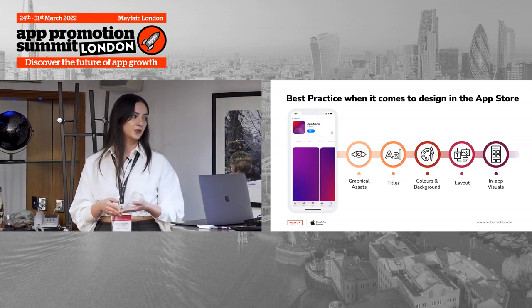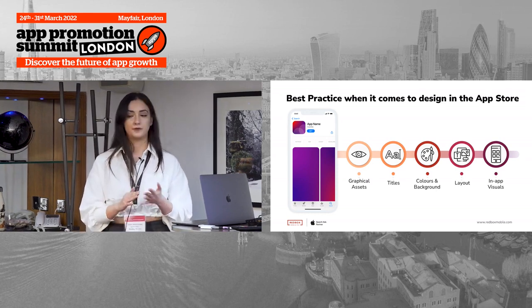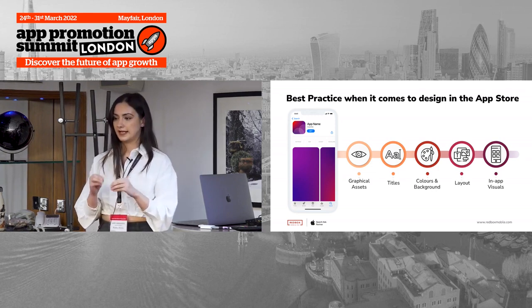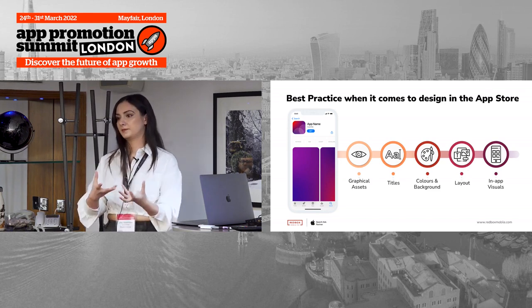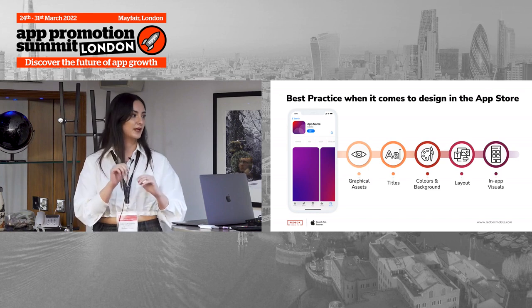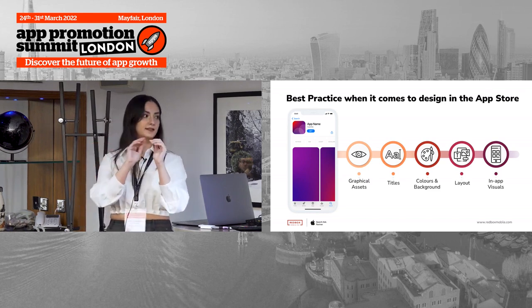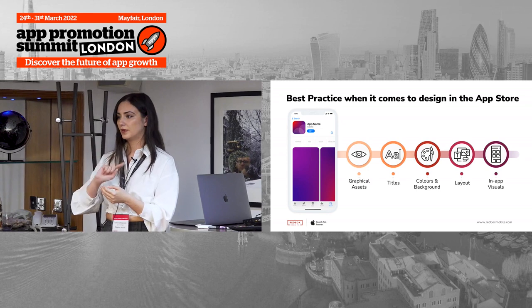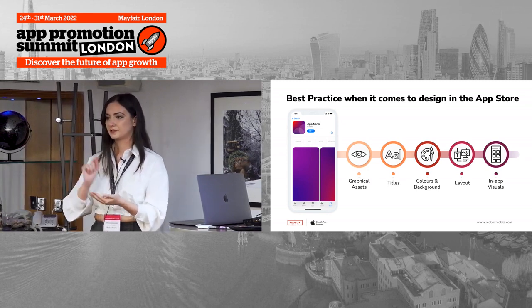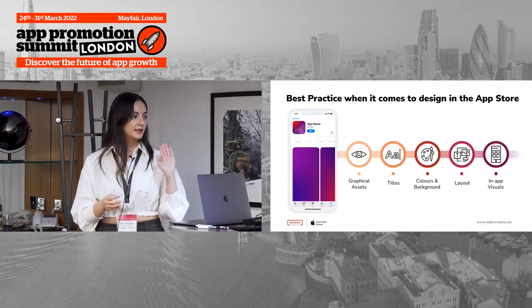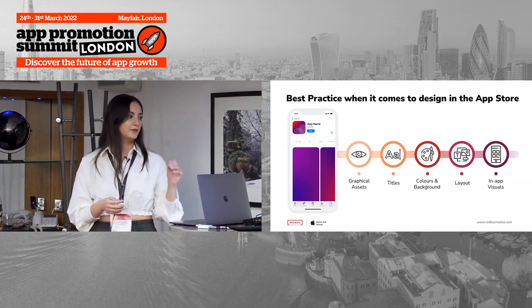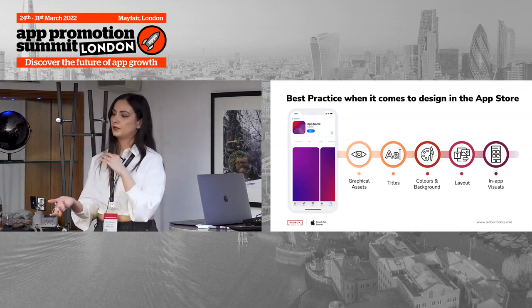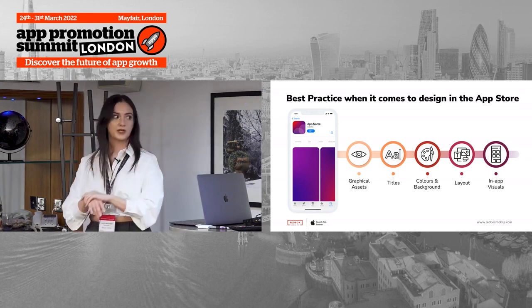Moving on to titles: these can be call-to-actions, benefit-based or feature-based copy, or any type of headline. What's very important is that they need to be visual enough to catch the eye. You may want to say a lot, but if you have 15 lines of tiny text on a small phone display, no one is going to be able to read that in search results. Keep it as short and concise as possible. If you want to write something longer, use a different color or highlighting strategy for the parts you want to emphasize.